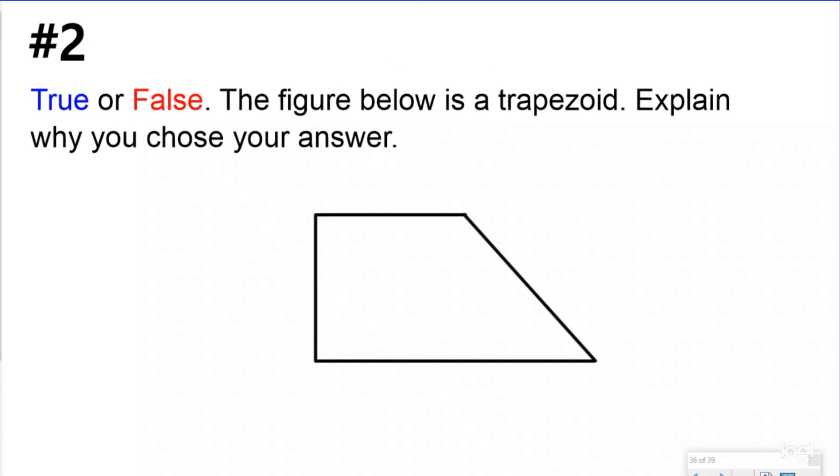So here for number two we have a true or false question, but more than that, we have to explain why you chose your answer. So whatever you pick, you have to be able to write out your explanation. So it says true or false, the figure below is a trapezoid. So the first thing I want you to think about is what are the attributes of a trapezoid. Because if you look at this first, you're going to think nope, not a trapezoid, because it's not in that trapezoid shape that I normally think about, right? It doesn't look like that.